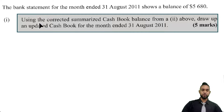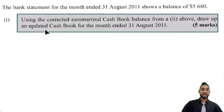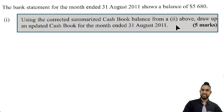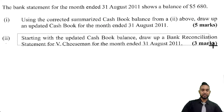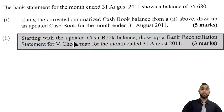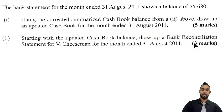We have to use the corrected summarized cash book balance from part (a) above to draw up an updated cash book for the month ended 31st August 2011. Following that, we have to start with the updated cash book balance and draw up a bank reconciliation statement for V. Cheeseman for the month ended 31st August 2011 — three marks.